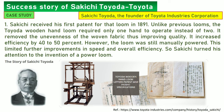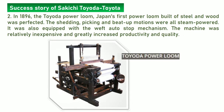Let's take a case study related to the development of weaving machines — the success story of Mr. Sakichi Toyota, Japanese inventor and industrialist. Sakichi received his first patent for his loom in 1891. His Toyota wooden hand loom required only one hand to operate instead of two. In 1896, the Toyota power loom — Japan's first power loom built of steel and wood — was perfected. The shedding, picking and beat-up motions were all steam powered, and it was also equipped with the weft auto-stop mechanism. The machine was relatively inexpensive and greatly increased productivity and quality.